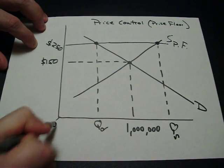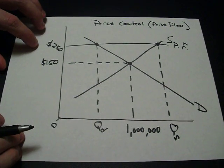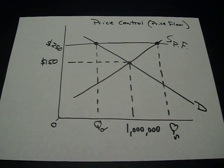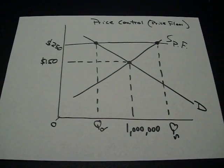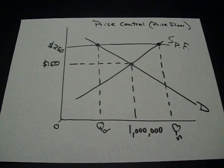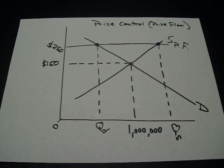Now if zero is back here, quantity supplied is greater than quantity demanded, and that's the definition of a surplus. The government says $150 is too low. They set a price floor at $250. Now quantity supplied is greater than quantity demanded, and that's just the definition of a surplus.